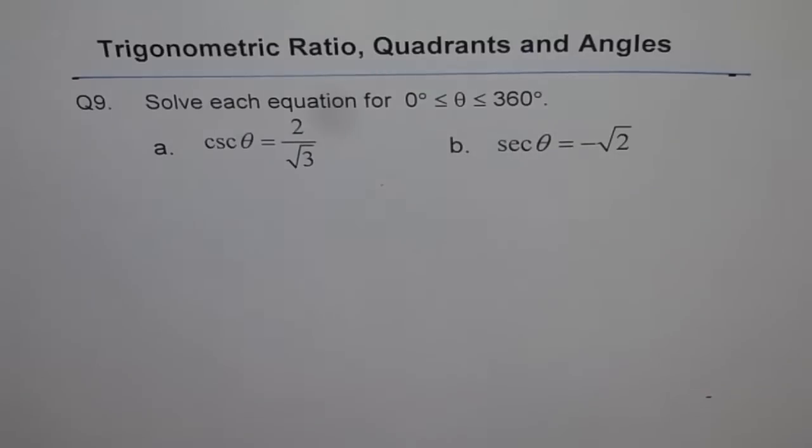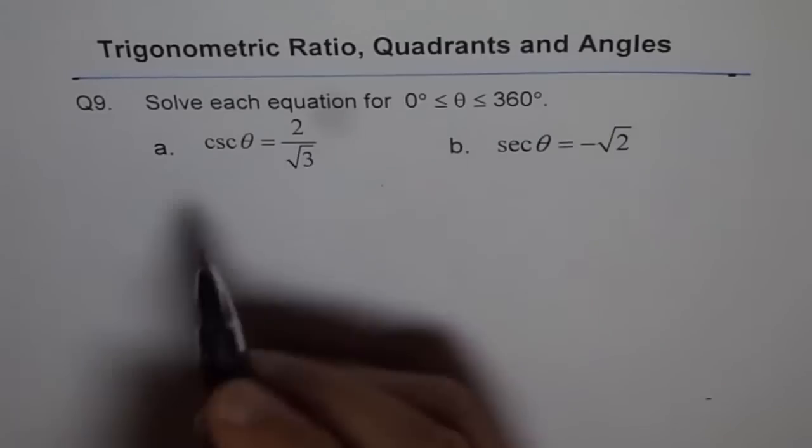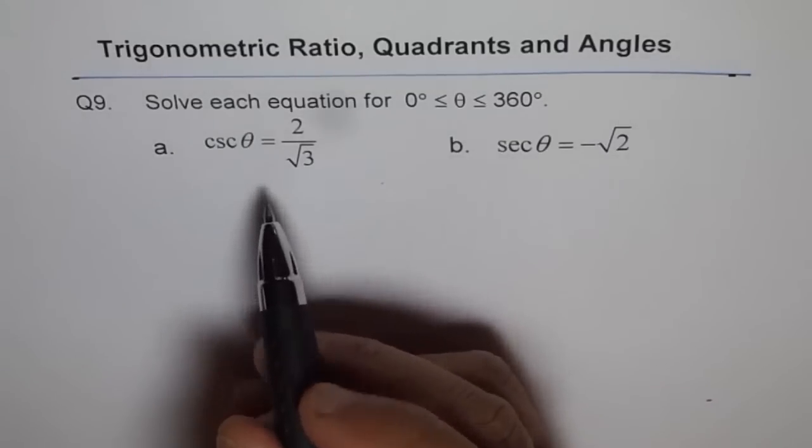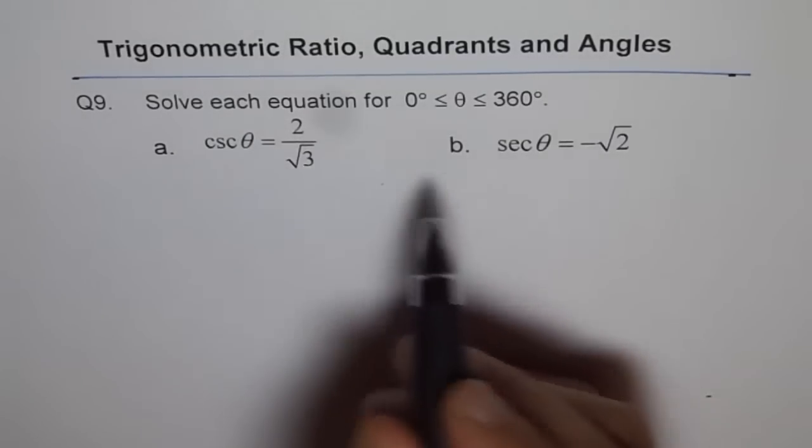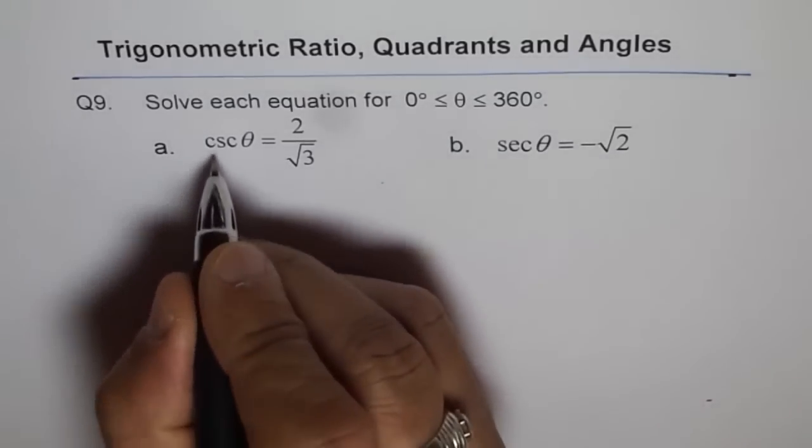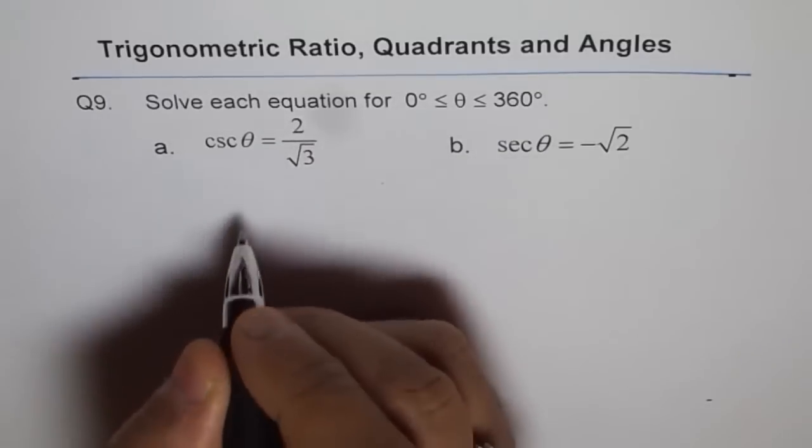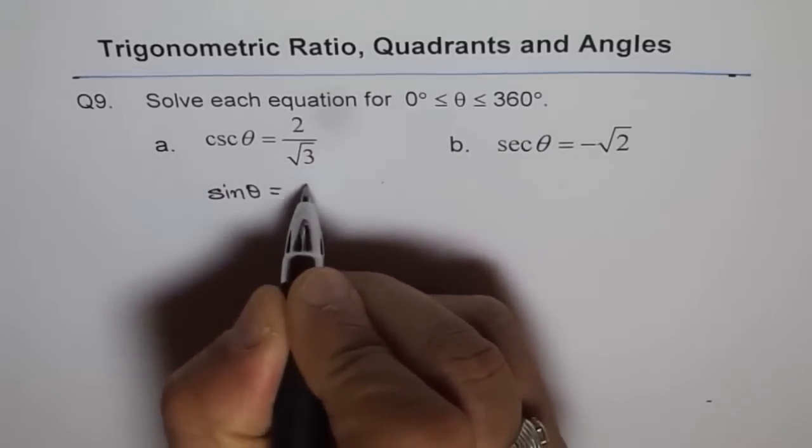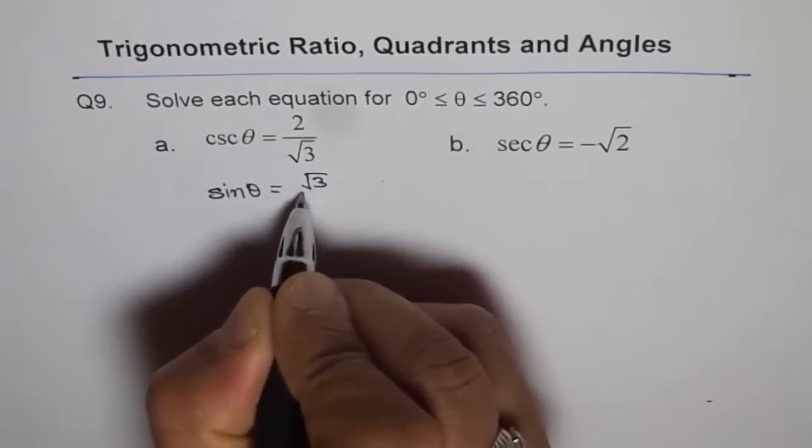Now to solve this, it is better to write it in the terms of sine theta and cosine theta and then use these special triangles. So we can write cosecant theta equals to 2 over square root 3, that means sine theta equals to square root 3 over 2.